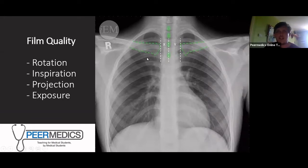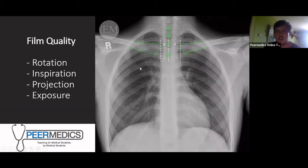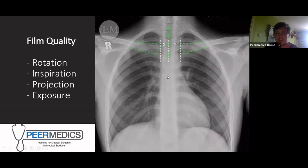To check rotation, look at the clavicles — they need to be equidistant from the spinous process. On this image, the distances indicated by X are a little shorter than those indicated by Y, so you could argue this film is slightly rotated. If you want to show off, also note that the spinous processes should be vertically orientated, following a straight line with no curvature.